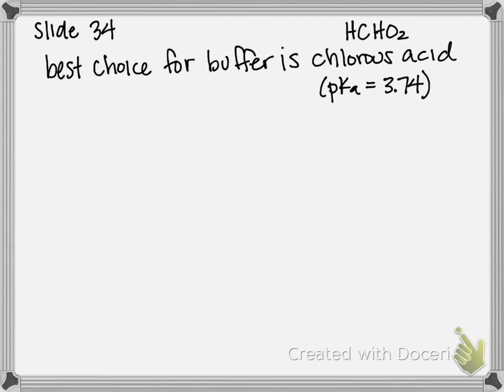Now that we know that, we can use the Henderson-Hasselbalch equation and our desired pH of 4.25 to back-calculate and figure out the ratio of base to acid that's going to give us as close to our desired pH of 4.25 as possible.